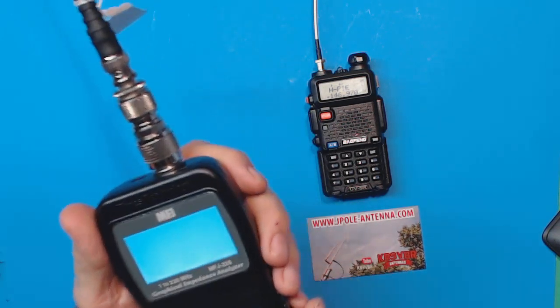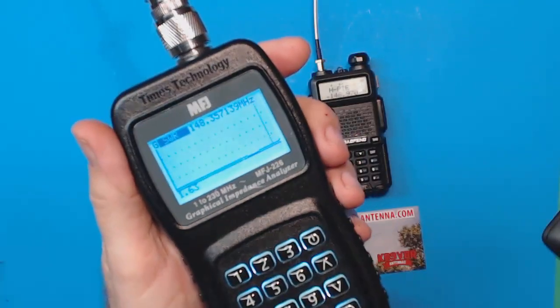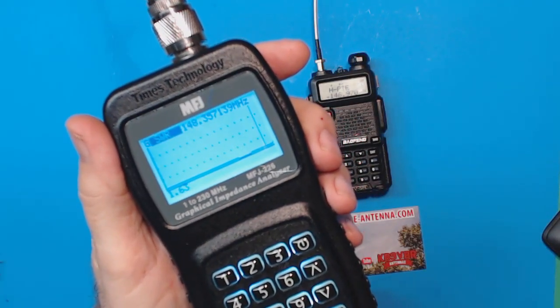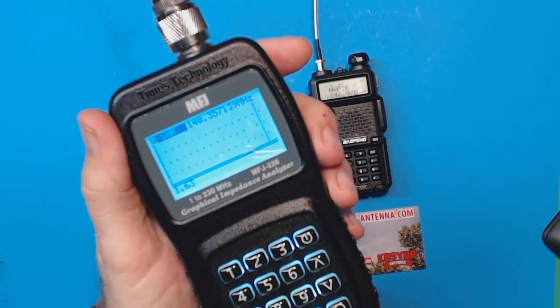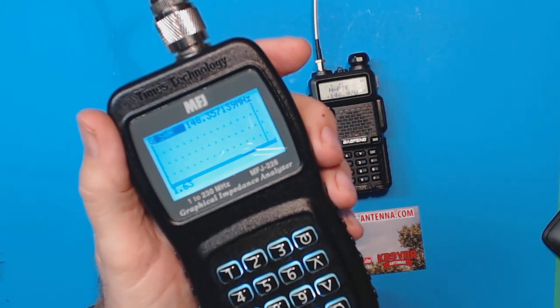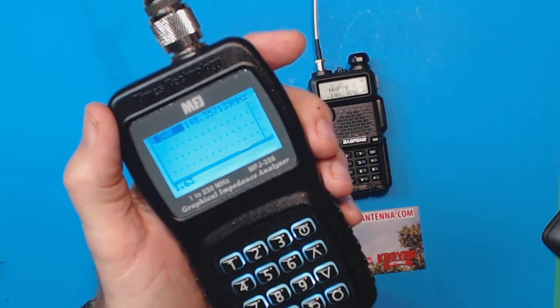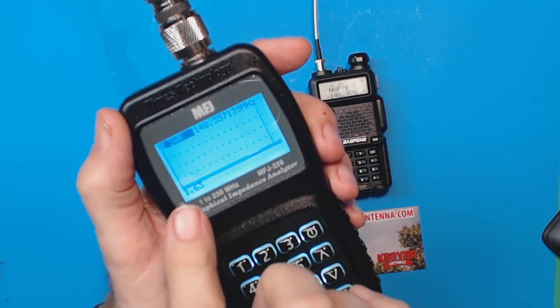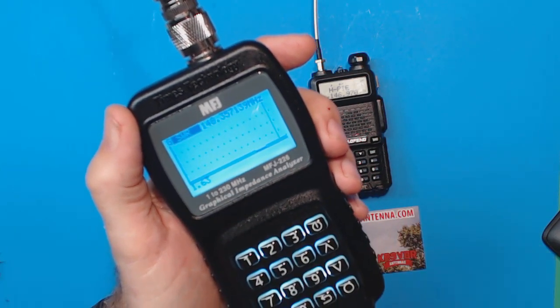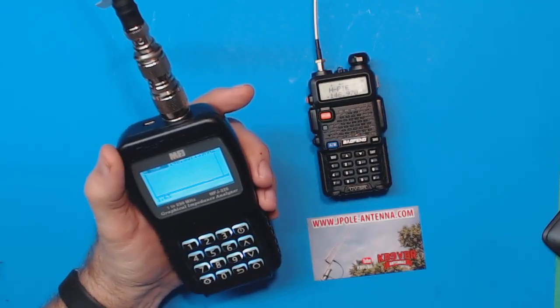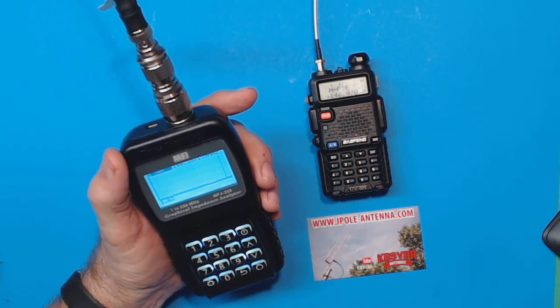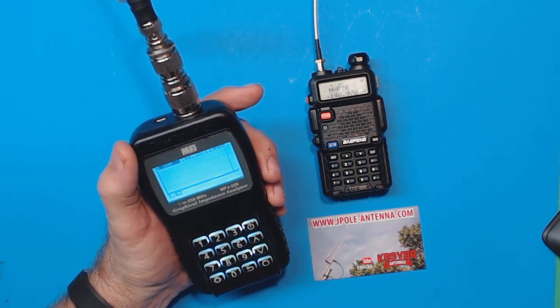Then we're going to check SWR. It's now running and there's the plot. It's like there's nothing there. First time I did this I thought my analyzer wasn't working - that's because the SWR is down in the mud, which is where you want it. Right now I'm at 148 megahertz and the SWR is 1.63.